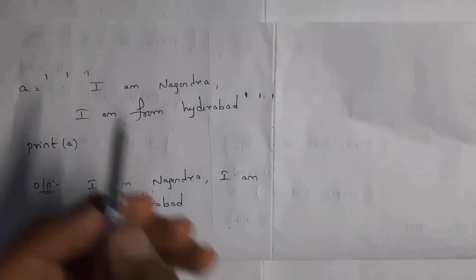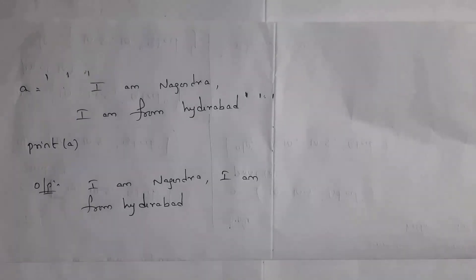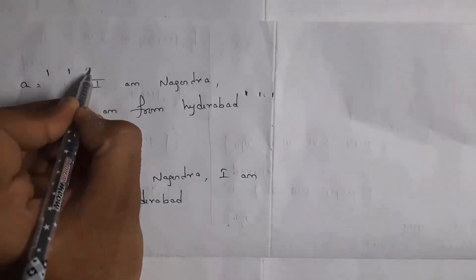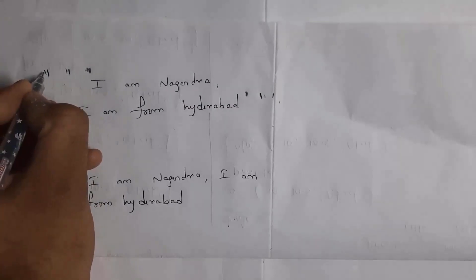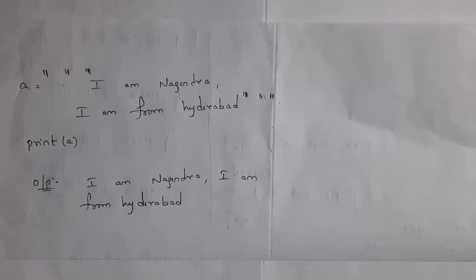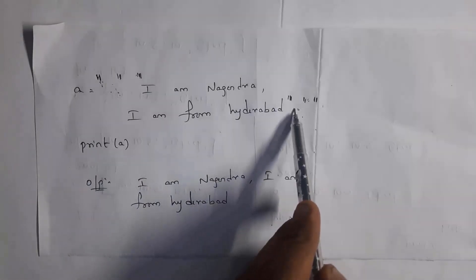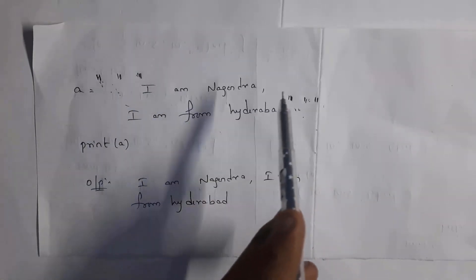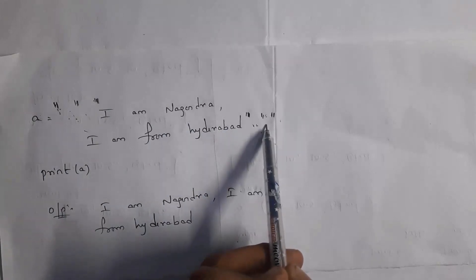If you want to print a multi-line string, you need to represent it in either three single quotations or three double quotations. Here I took three single quotations at the start and three single quotations at the end. You can also use three double quotations in the same way. If you start with three double quotations, you must end with three double quotations. Mixing them will display an error.